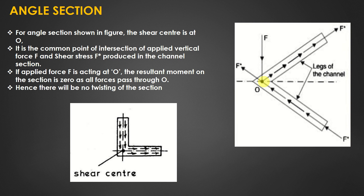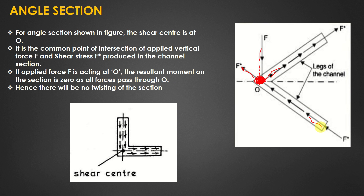Now let us come to angle section, which is our main topic today. For angle section, as shown in the figure, the shear center lies at the corner point — the intersection point. At this point, all the moments will be balanced because force F* is balanced by the applied force. The shear center is the common point of intersection of the applied vertical force F and the shear force F* produced in the section. So for the angle section, the shear center is located at the intersection point.